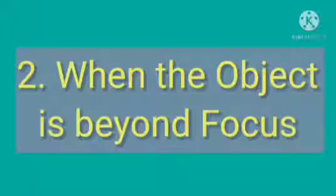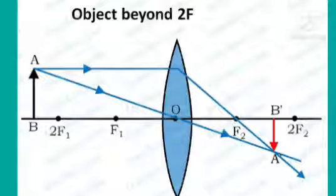Next, when the object is placed beyond focus, then a real, inverted, diminished image is formed on the other side of the lens.